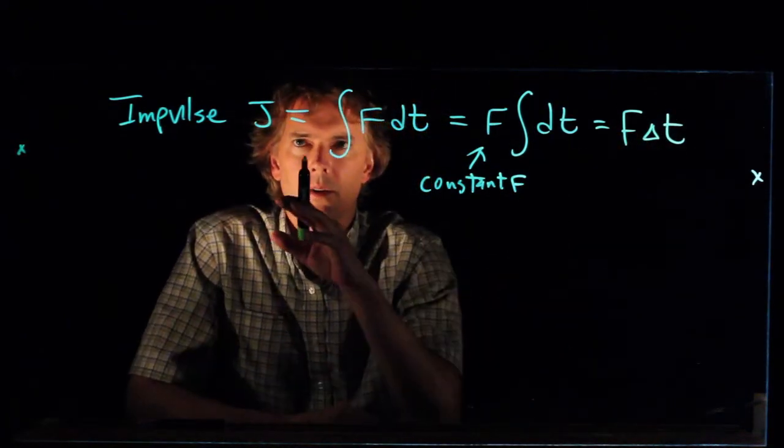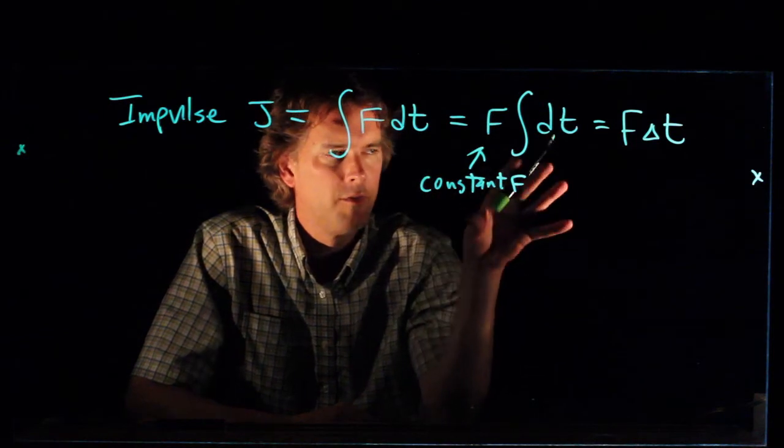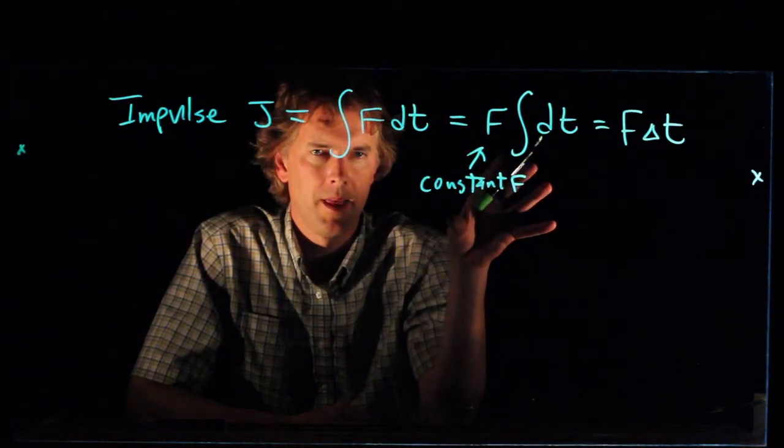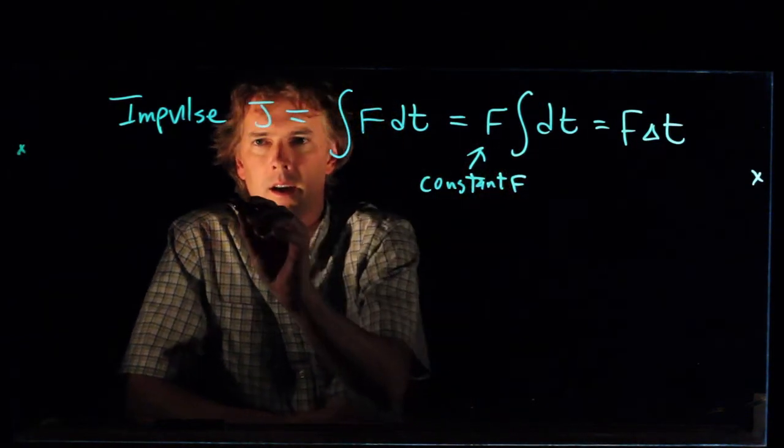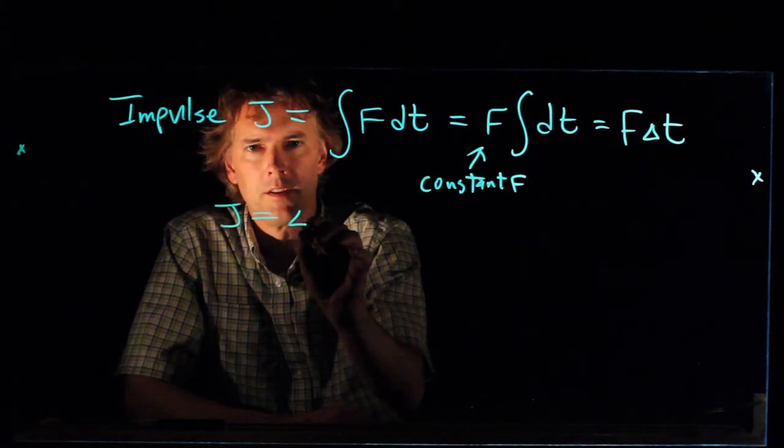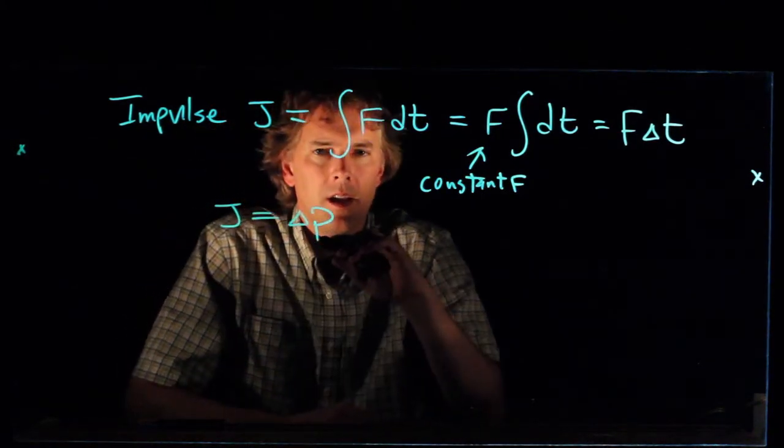Okay, so impulse is related to force and how much time that force is applied. But impulse j is also just delta p.